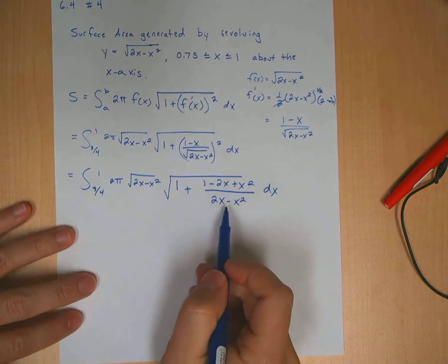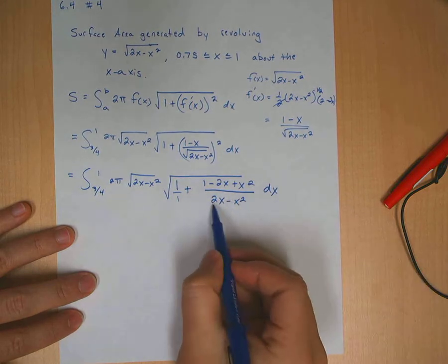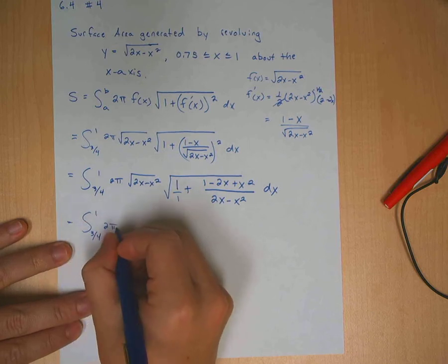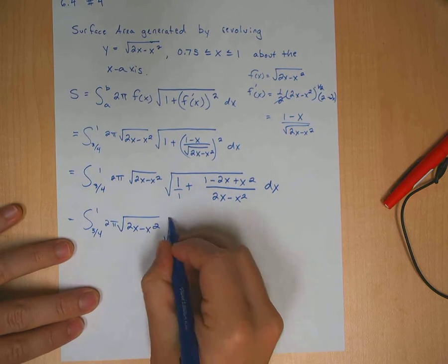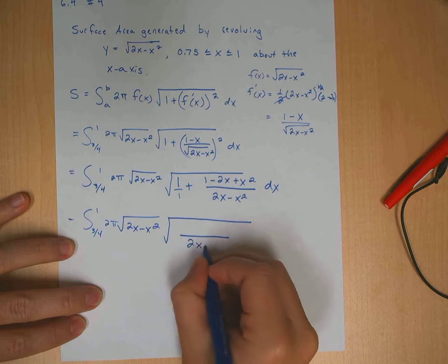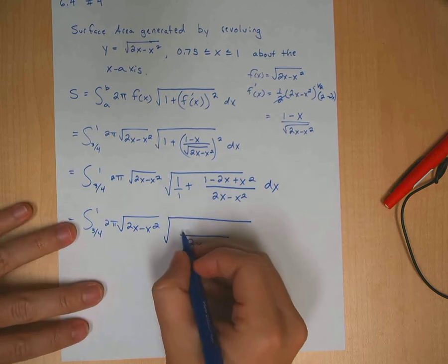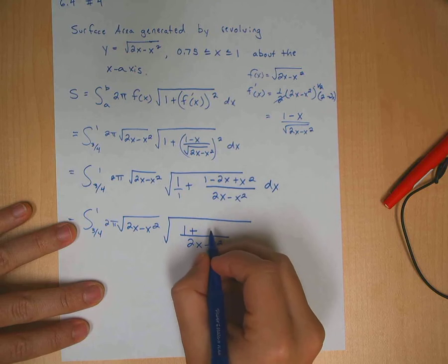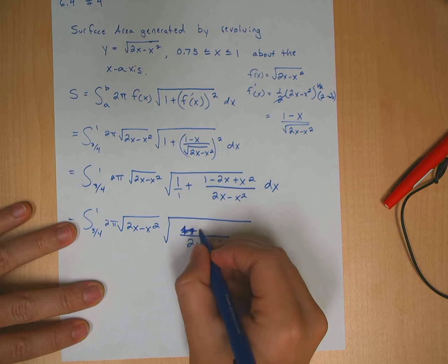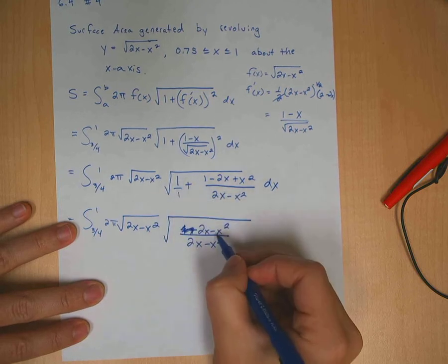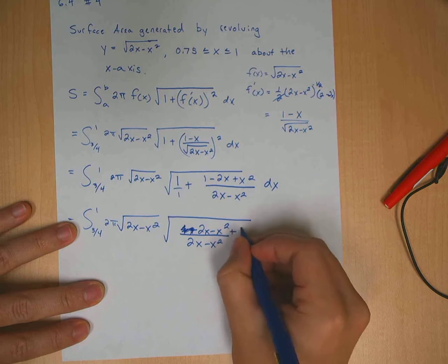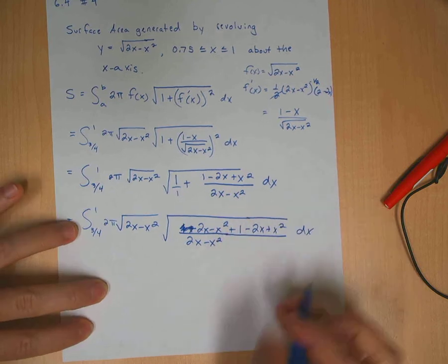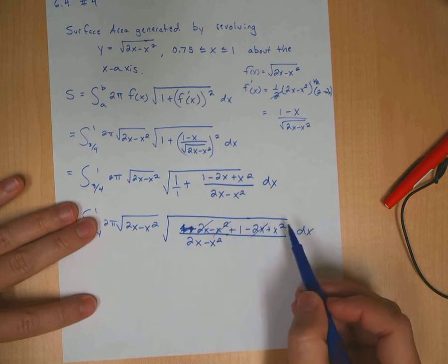Now on the inside of the square root, I'm going to find a common denominator. The common denominator is 2x minus x squared. So on top we get 2x minus x squared plus 1 minus 2x plus x squared. The 2x terms cancel and the x squared terms cancel, leaving just 1 on top.